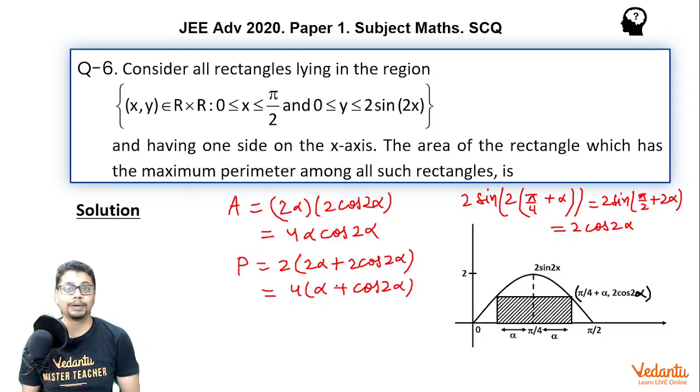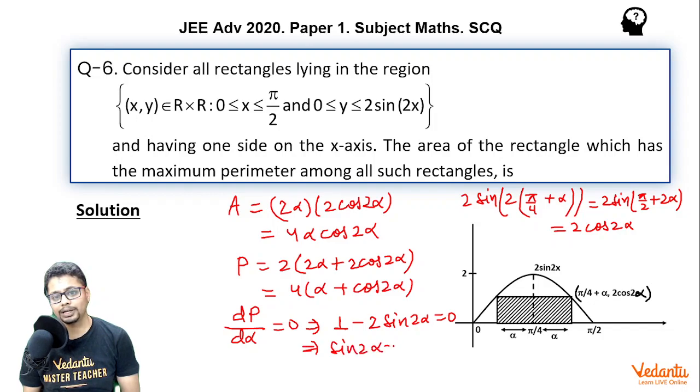Now we want to maximize the perimeter. So we would use the concept of maxima minima and we would consider dP/dα and would make it 0 to get the value of α for which P is maximum. So dP/dα should be 0 which essentially means 1 minus 2sin(2α) should be 0. This 4 would cancel out. So essentially I have sin(2α) equal to 1/2.